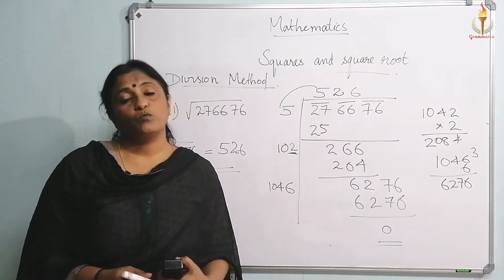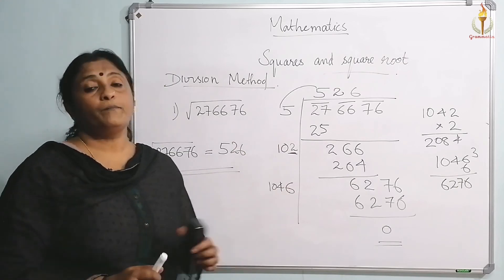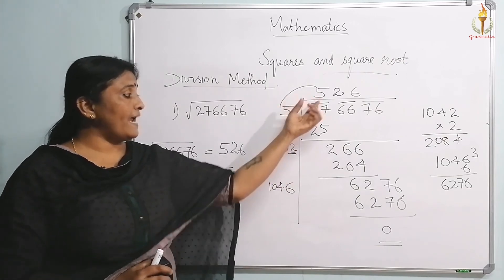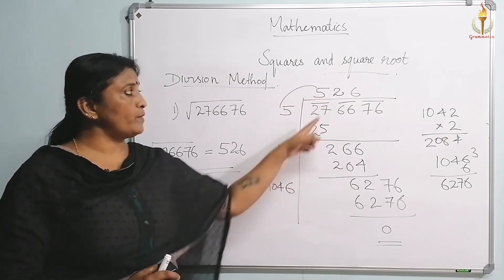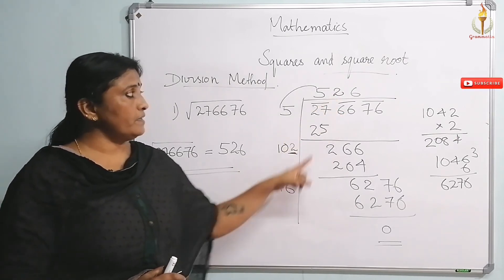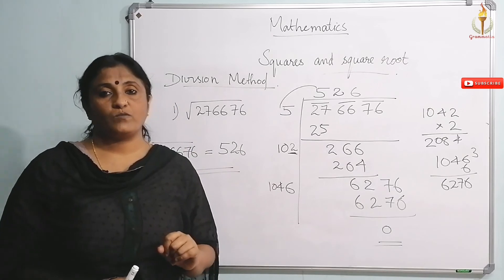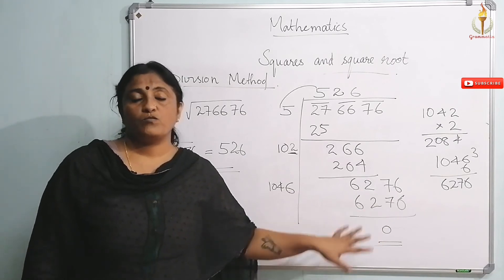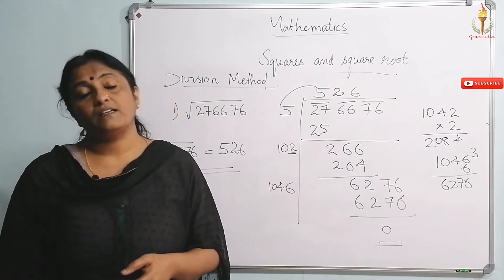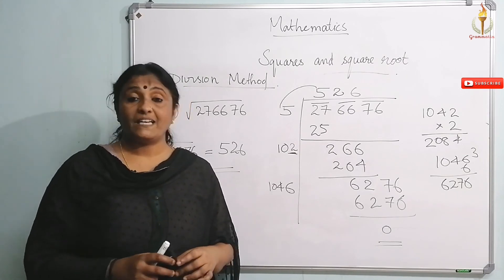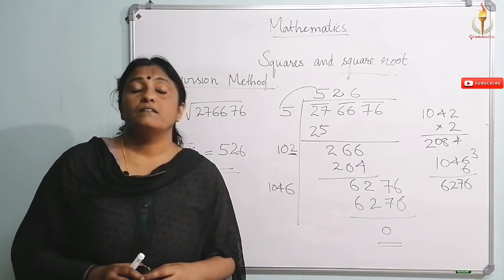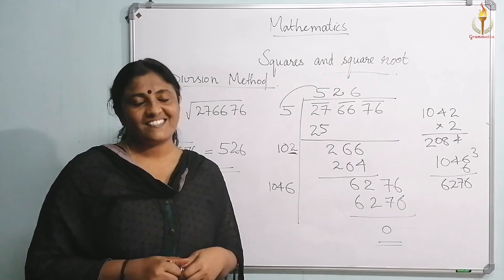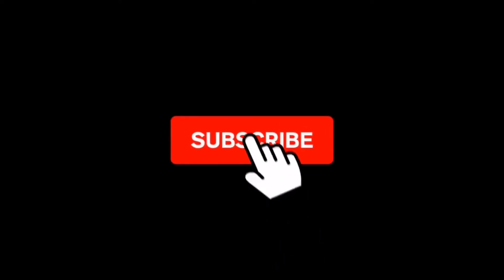This is how you find the square root of a perfect square using the division method. Every time it involves a trial-and-error approach — you double the quotient each step and find the next digit. The same division method can also be used to find the square root of numbers which are not perfect squares, which we will be doing in the coming video. Thank you and bye.